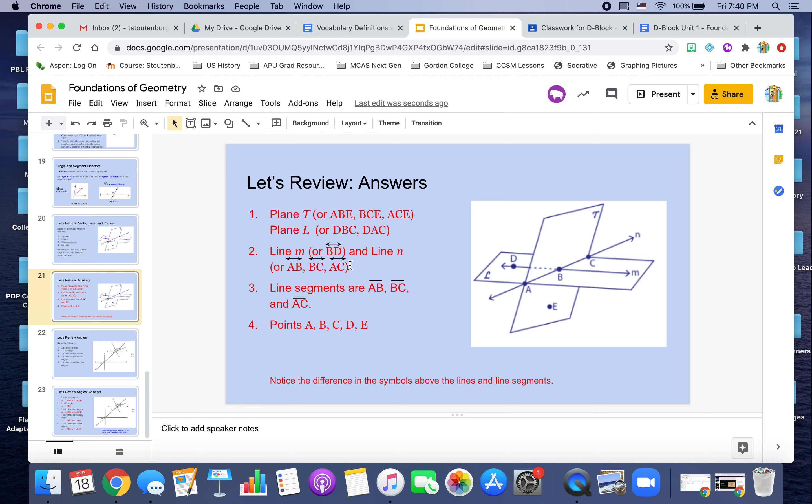Now with a line, remember a line can similarly be named using the lowercase letters. So here line N, here I have line N or I can identify this line using any two of the points. So I could use AB or AC or BC. And again, the order of those does not matter.